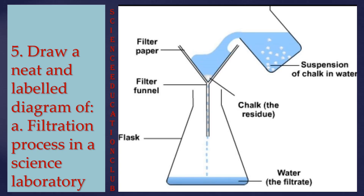Draw a neat and labeled diagram of the filtration process in a science laboratory. The diagram of filtration is shown. We use filter paper and a funnel and a conical flask, and then we pour the mixture through the funnel. We get the clear water, called the filtrate, and whatever impurities remain in the filter paper are called the residue.